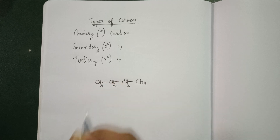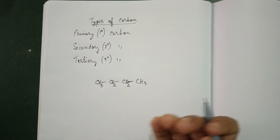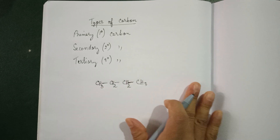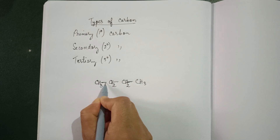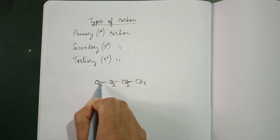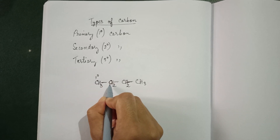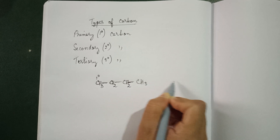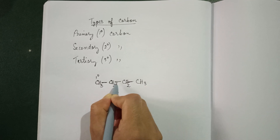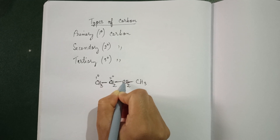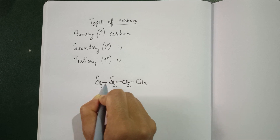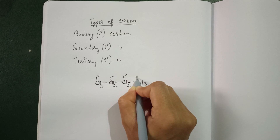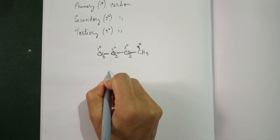Now we are going to specify each carbon — which one is primary or secondary. This carbon is connected to only one carbon directly, so it is primary. This carbon is directly connected to two carbons, so it is secondary. Some students get confused — just see the nearest directly bonded carbon. This carbon is directly bonded to two carbons, so it is secondary.